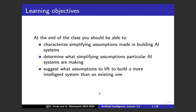Last time every word was important so I used writing. For the last half of this class I'm going to go through slides because it's much more of an overview. What we're going to do is characterize simplifying assumptions made in building AI systems, determine what simplifying assumptions particular AI systems use, and suggest what assumptions we could relax to build more intelligent systems.